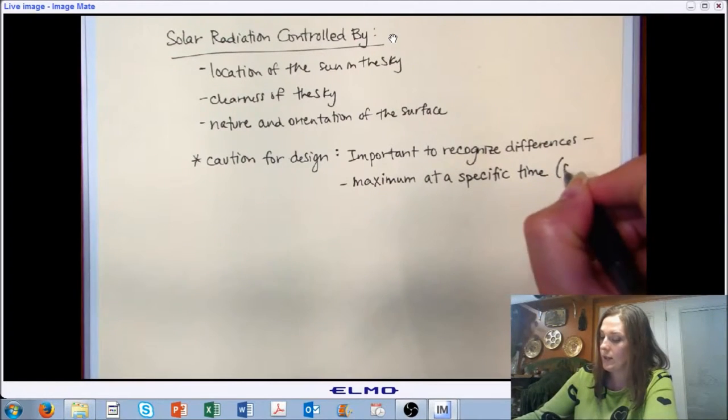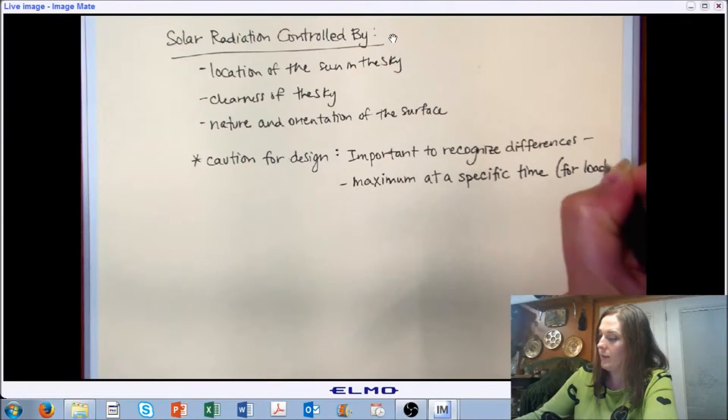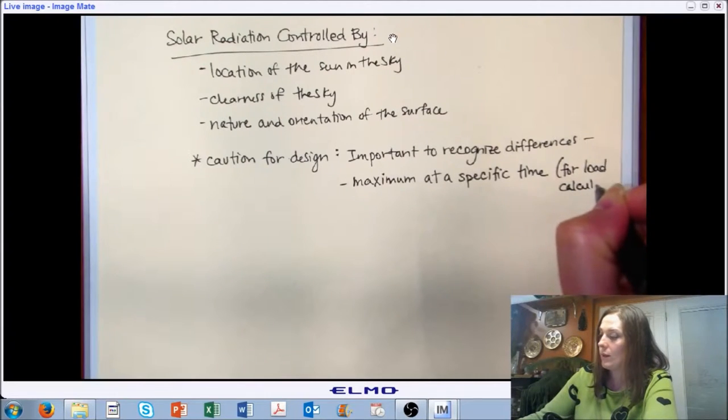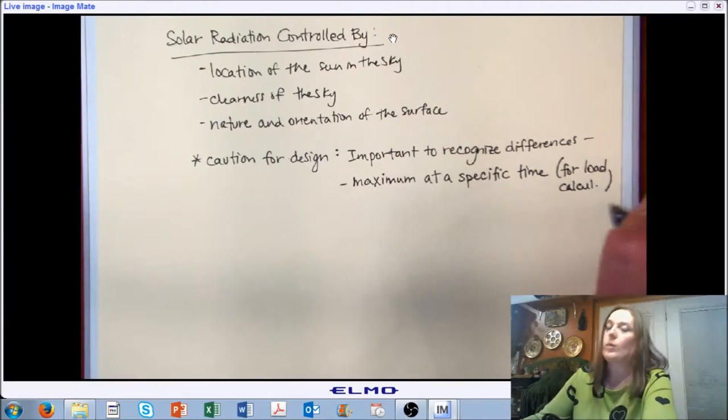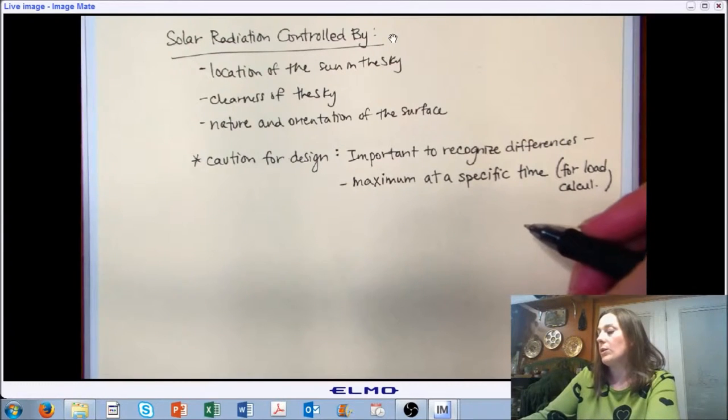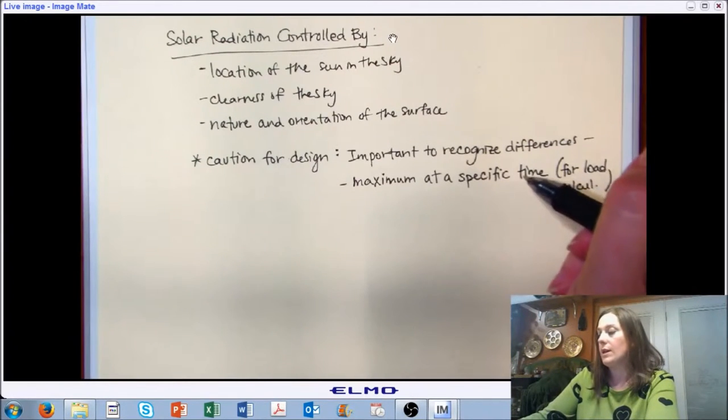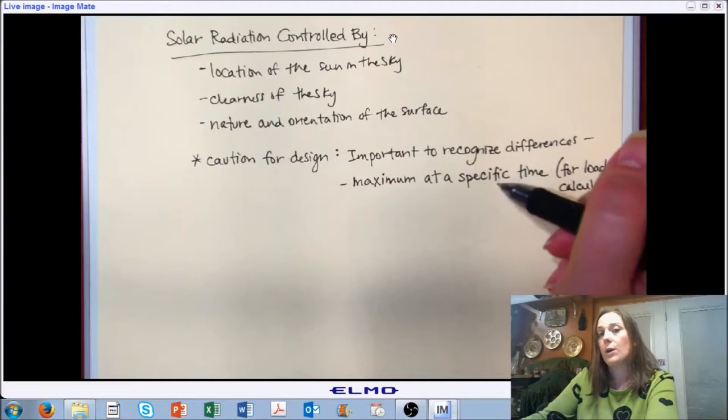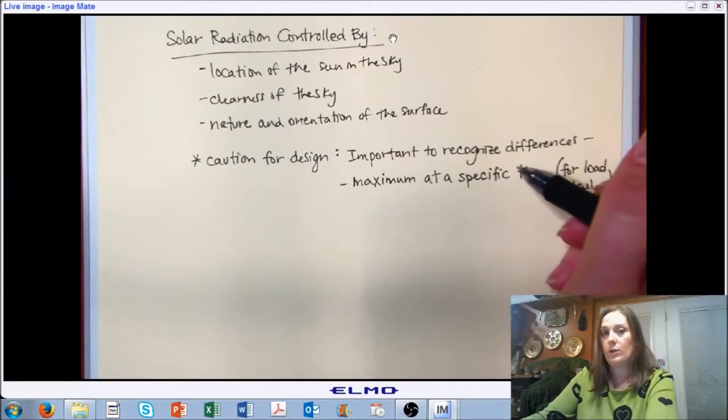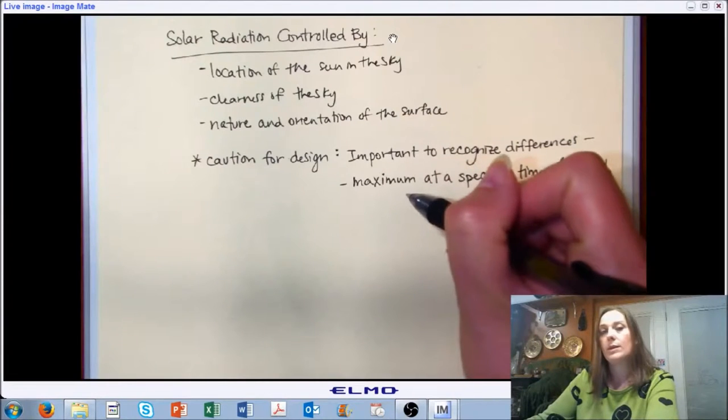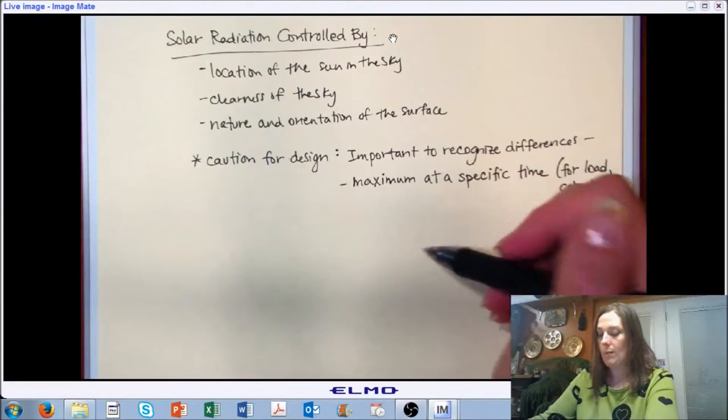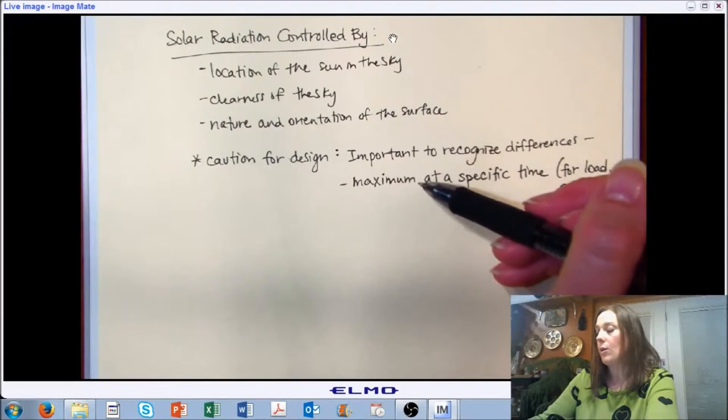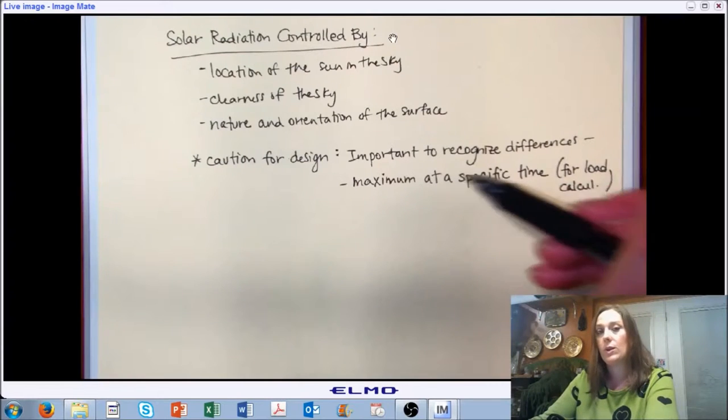We've already looked at this in previous chapters, not specific to solar radiation, but this approach. Whenever we're doing load calculations, we really want to think about worst case scenarios. You could look at solar radiation either as a load for your cooling system or as relief for your heating system. In which case you would need to consider, do you want maximum? Do you want minimum? How much can you always expect to be contributing? Or how much at the most extreme scenario do you need to account for?